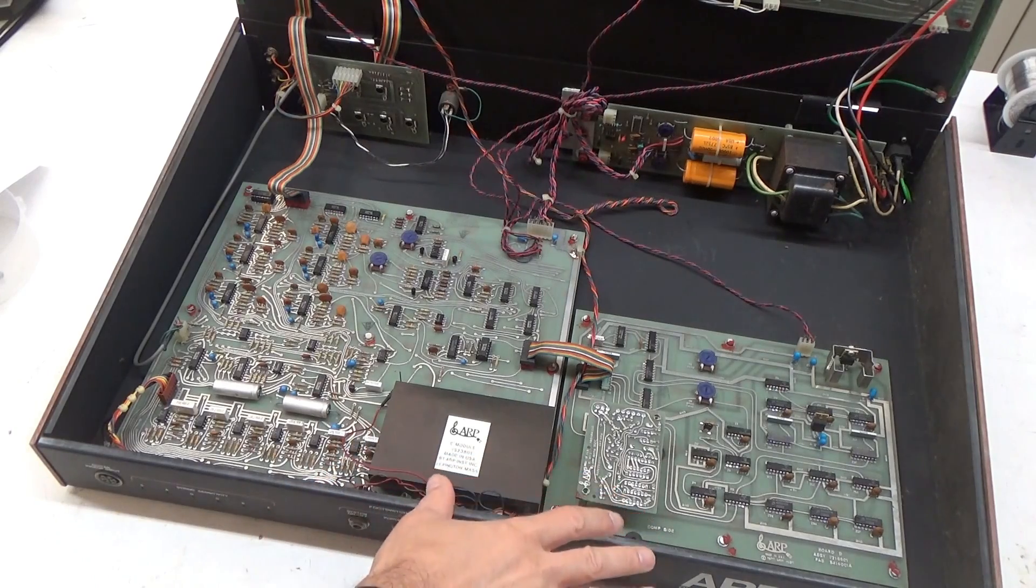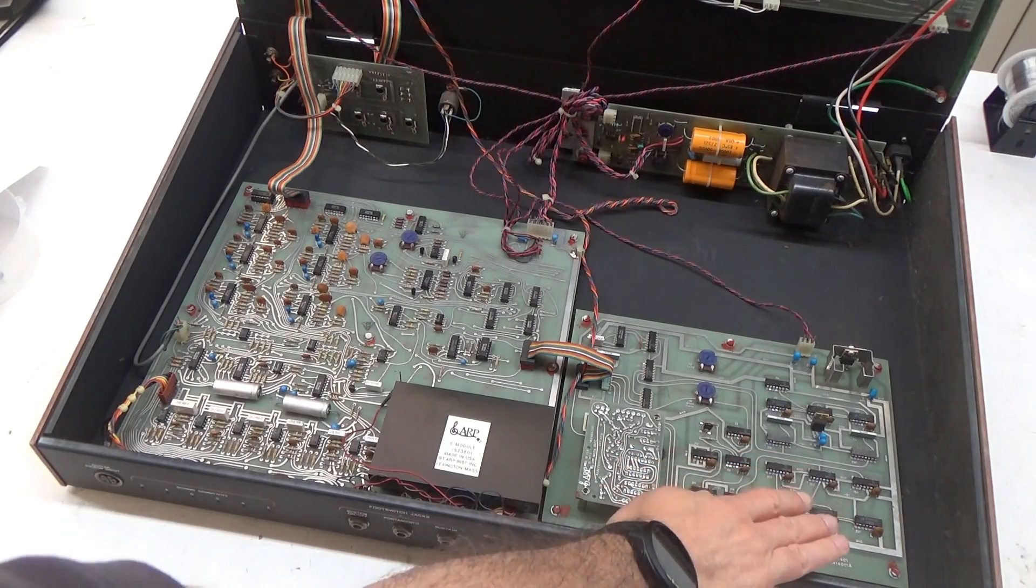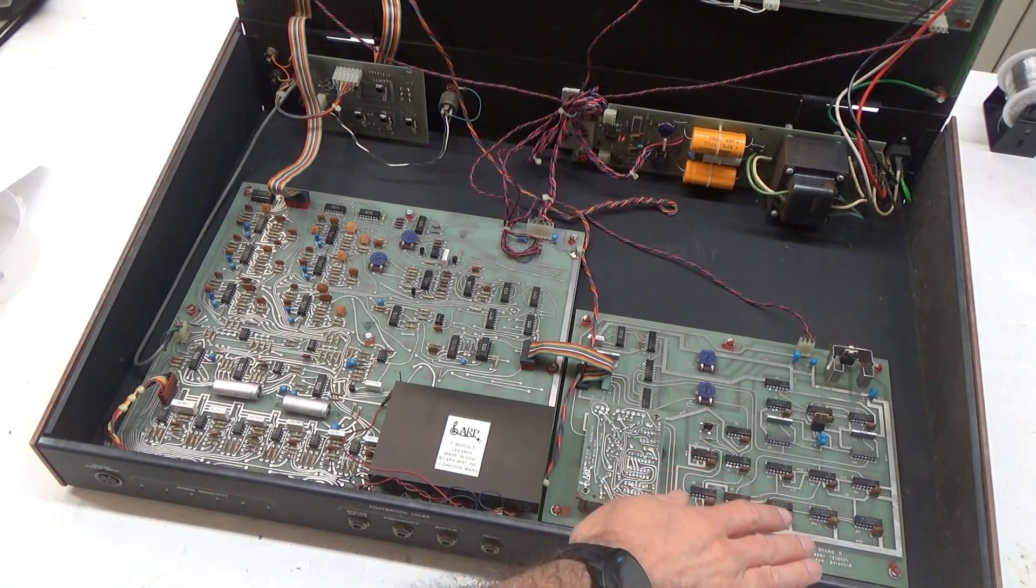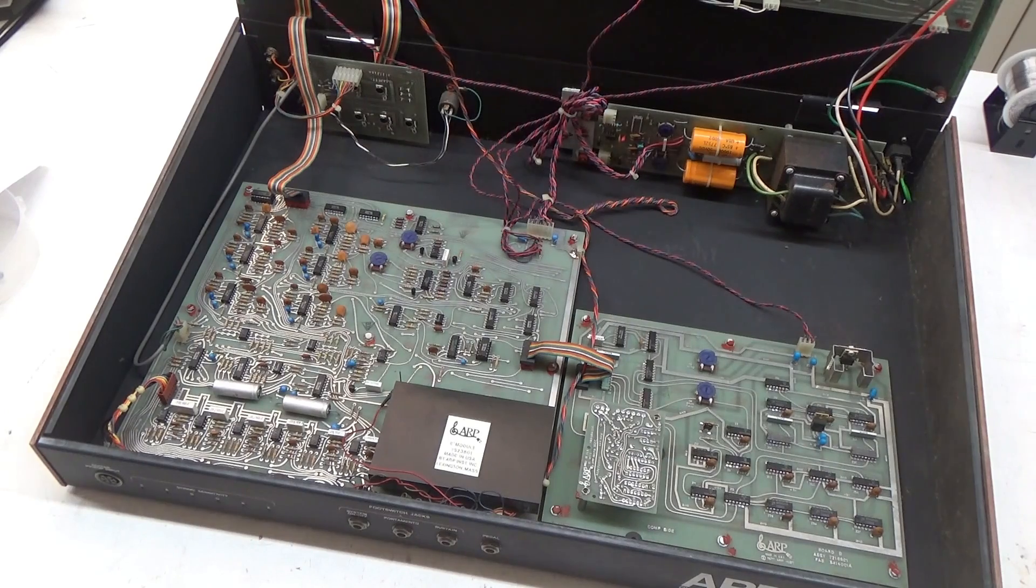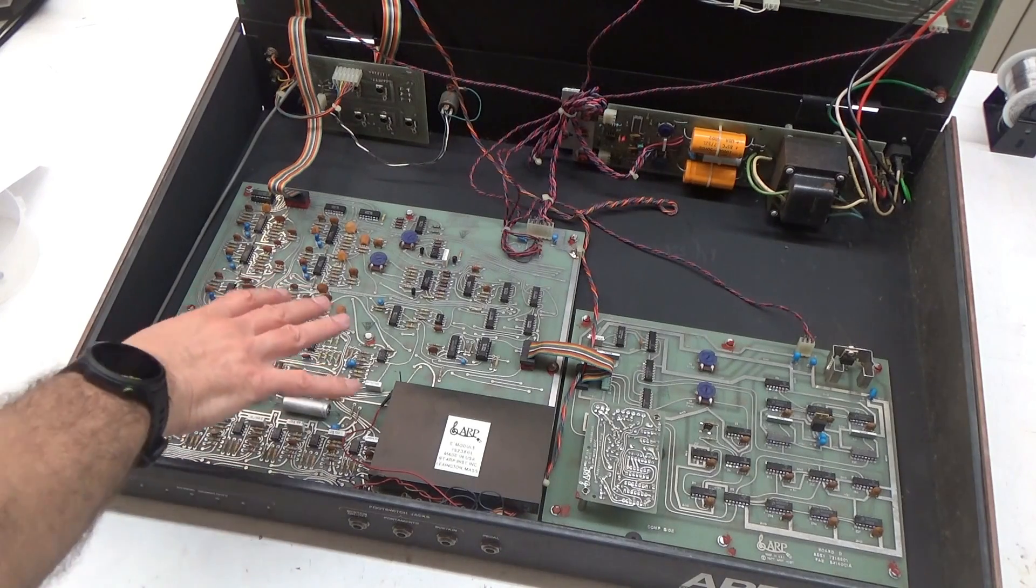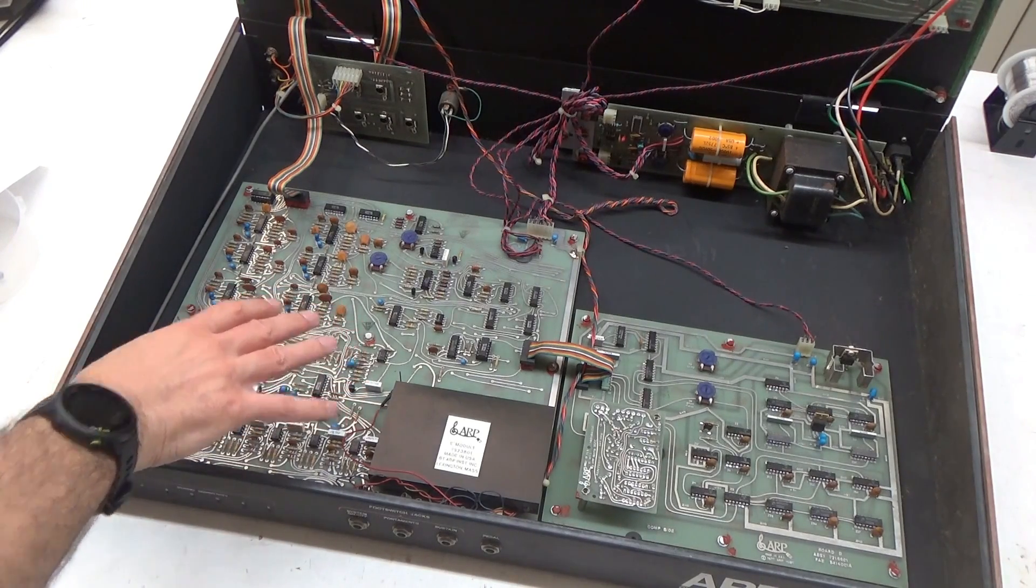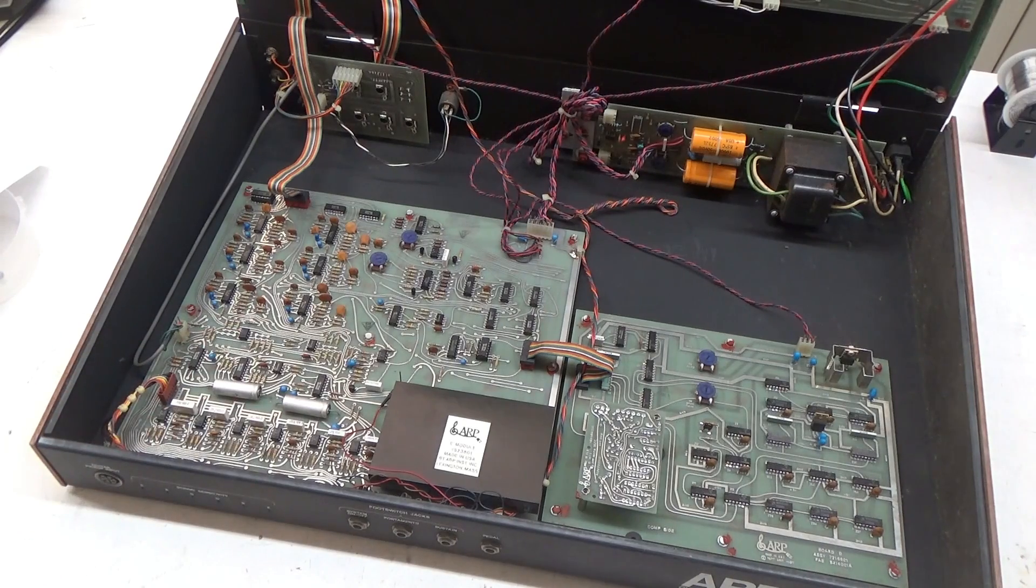On the bottom, there are two large circuit boards. The smaller of them here on the right is board D, which generates a control voltage from a guitar string signal. Board E is the larger one on the left, and it extracts triggers from the guitar signals and routes the correct string to the CV generator on board D.